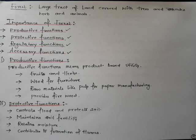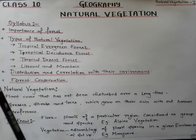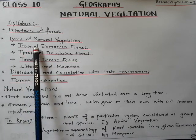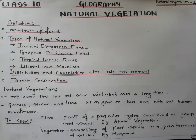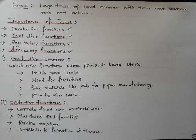Tropical deciduous forests are found along the eastern slopes of the Western Ghats due to seasonal rainfall, while the western slopes of the Western Ghats have evergreen forest due to heavy annual rainfall. In India, there are different types of forests: tropical evergreen forest, tropical deciduous forest, tropical desert forest, littoral, and mountain forests — present because of varied climatic and geographical conditions.